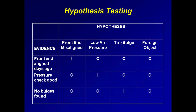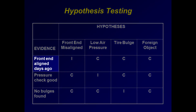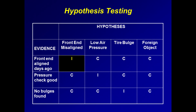One way to better understand what consistency means in this context is to ask: given this item of evidence, could this hypothesis be true? If the answer is yes, the evidence is consistent with the hypothesis. If the answer is no, the evidence is inconsistent with the hypothesis. For example, is 'front end aligned only a few days before' consistent or inconsistent with the first hypothesis? It is inconsistent, so we enter an I in that cell. Note that consistent or inconsistent aren't absolutes — you can come up with scenarios where every piece of evidence is consistent with every hypothesis, which gets you nowhere.